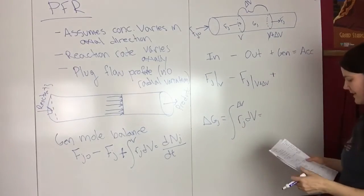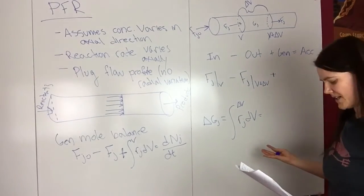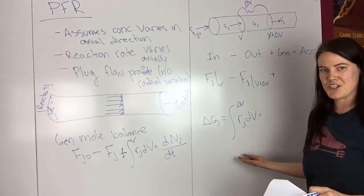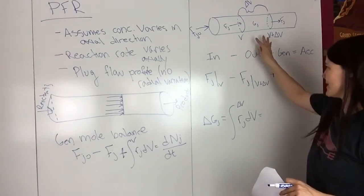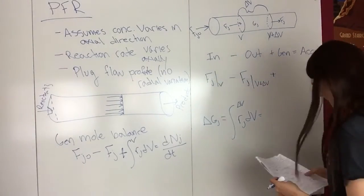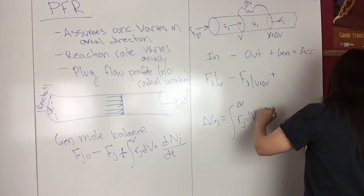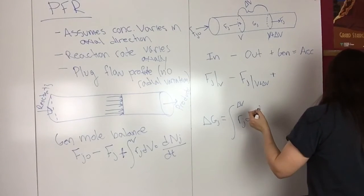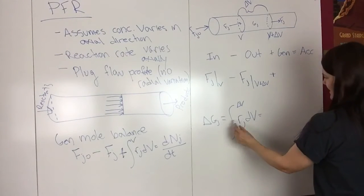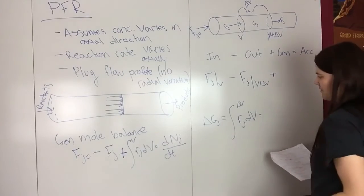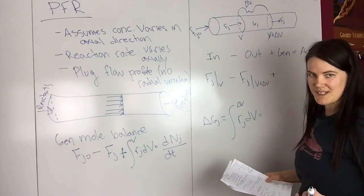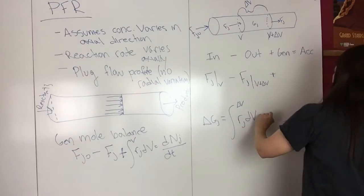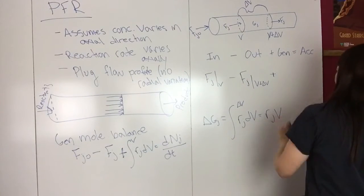If we assume there's no spatial variation in the volume, which we can do if this volume is really small, then we can pull the rate out of the integral because the rate doesn't depend on position if the volume is sufficiently small. We end up with R_J times delta V.